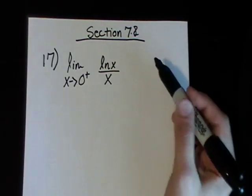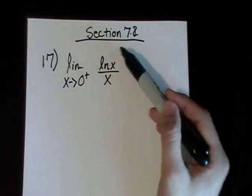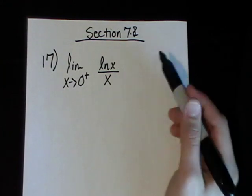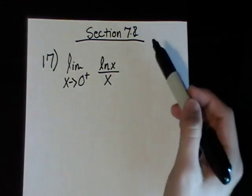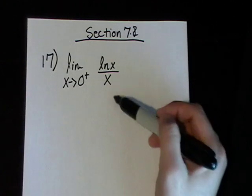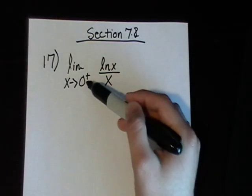Hello everyone. My name is Nareem, and I'm going to be doing problem 17 from section 7.8. The problem is asking us to find the limit of ln of x over x as x approaches 0 from the right.